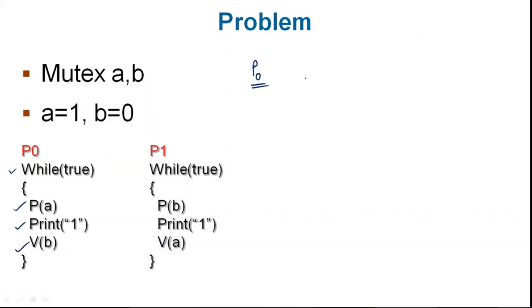What does P mean? P is a decrement operation. So A's value decrements: 1 becomes 0. A's value is now 0, and we are going to print 1.